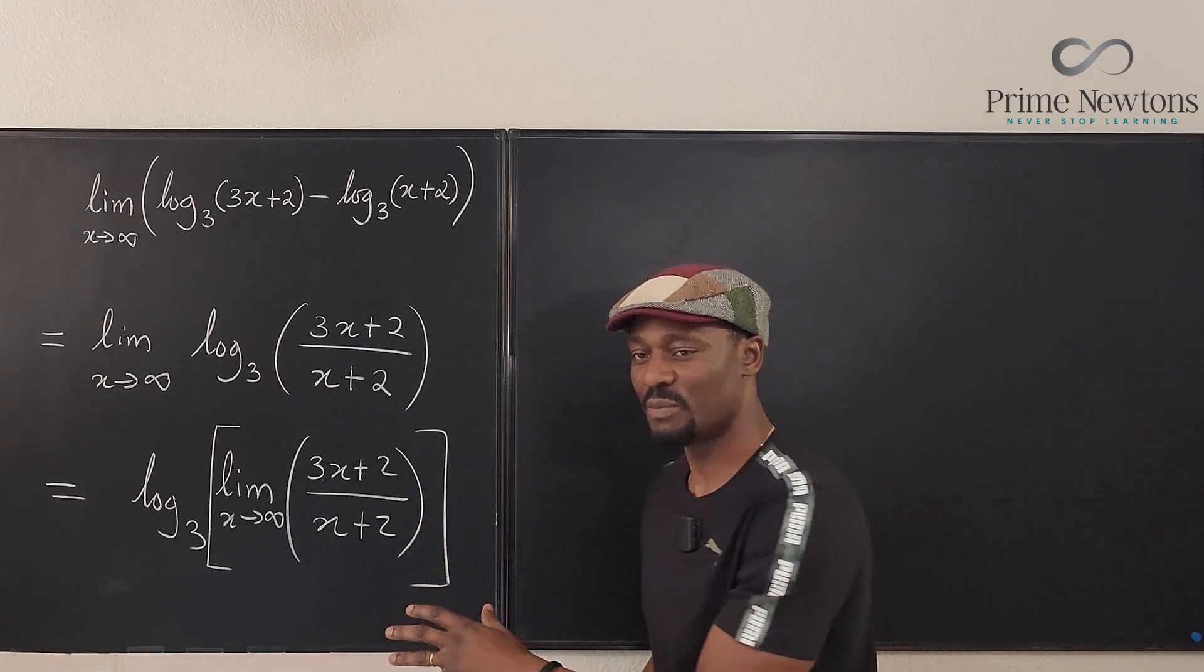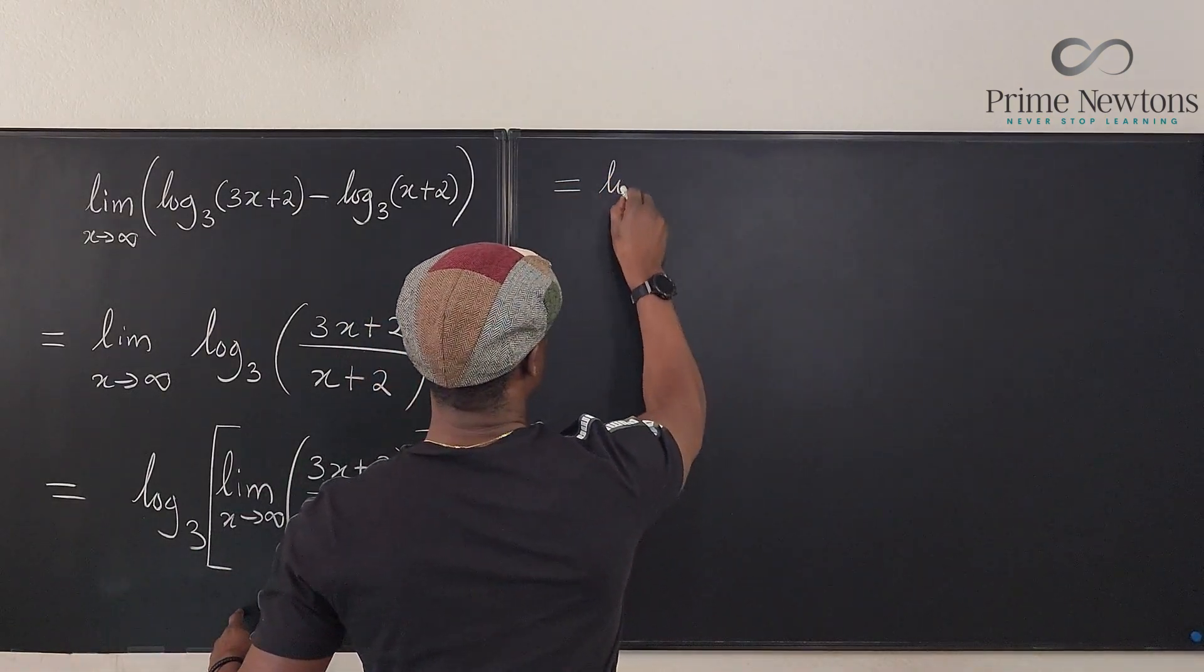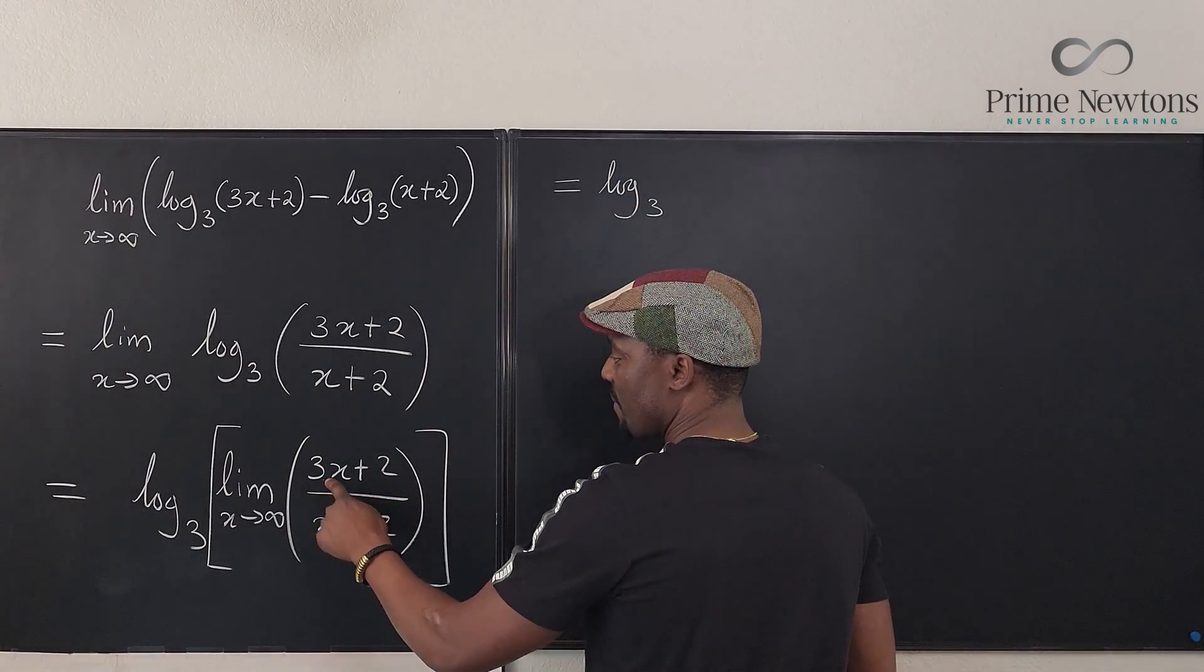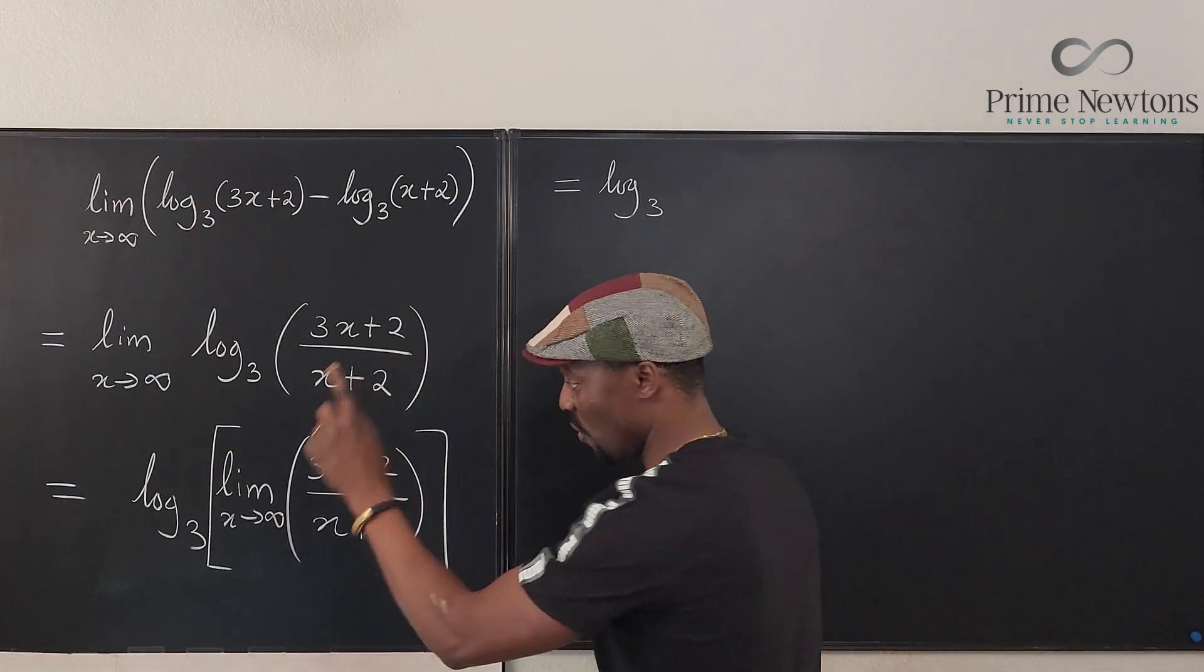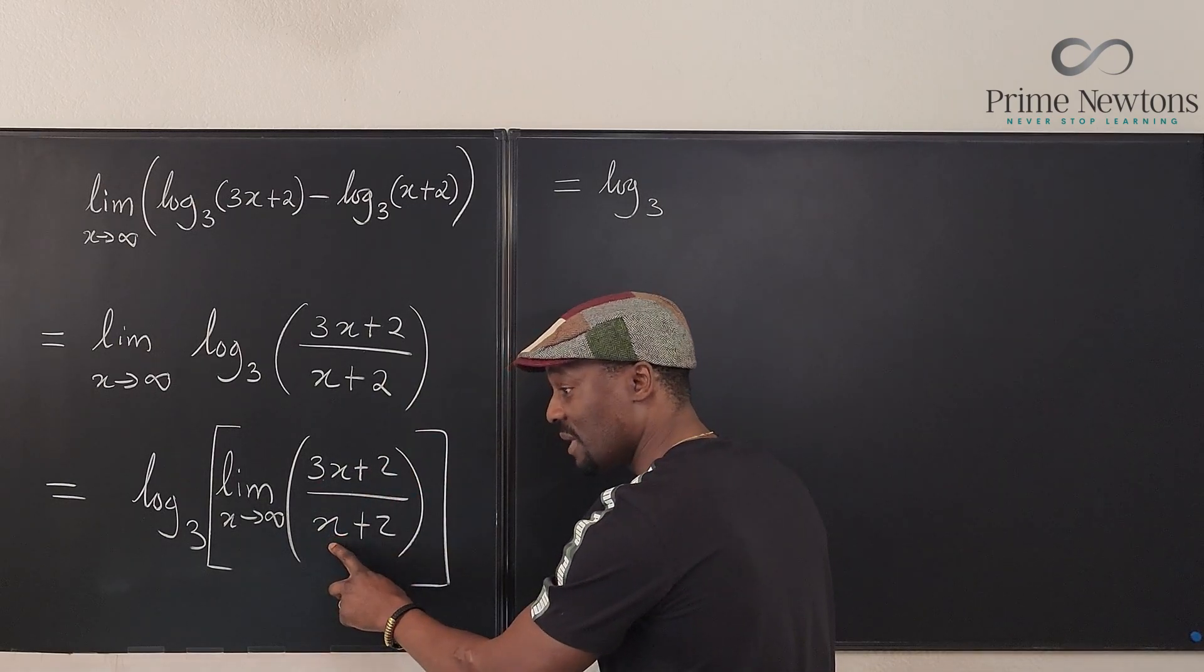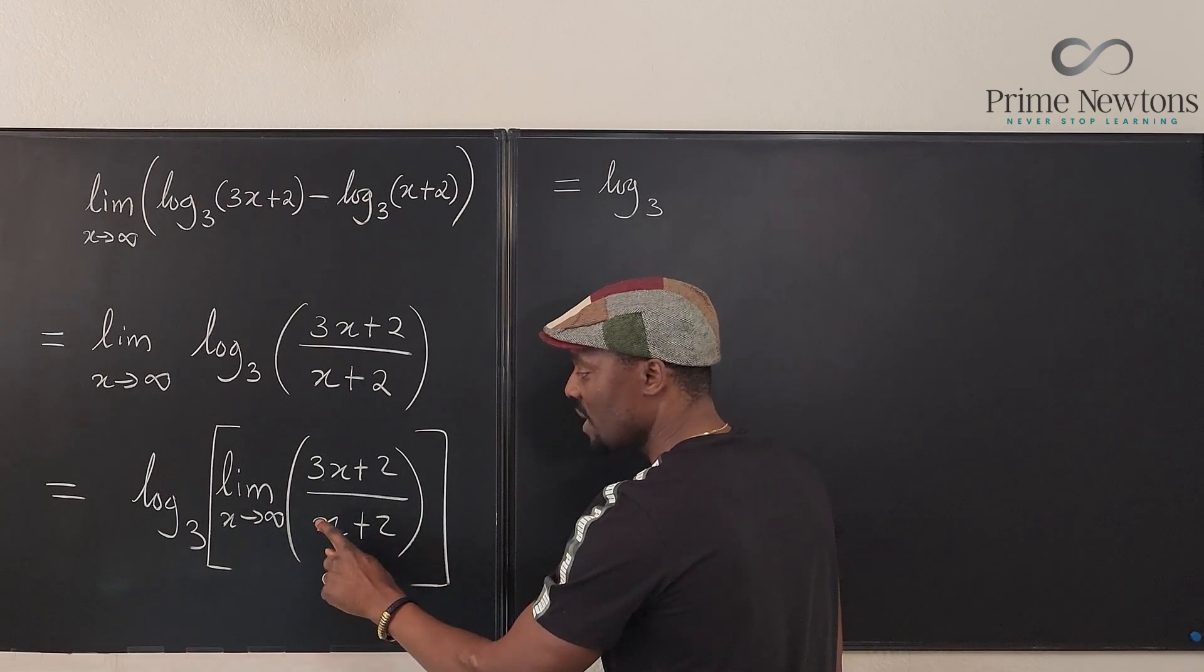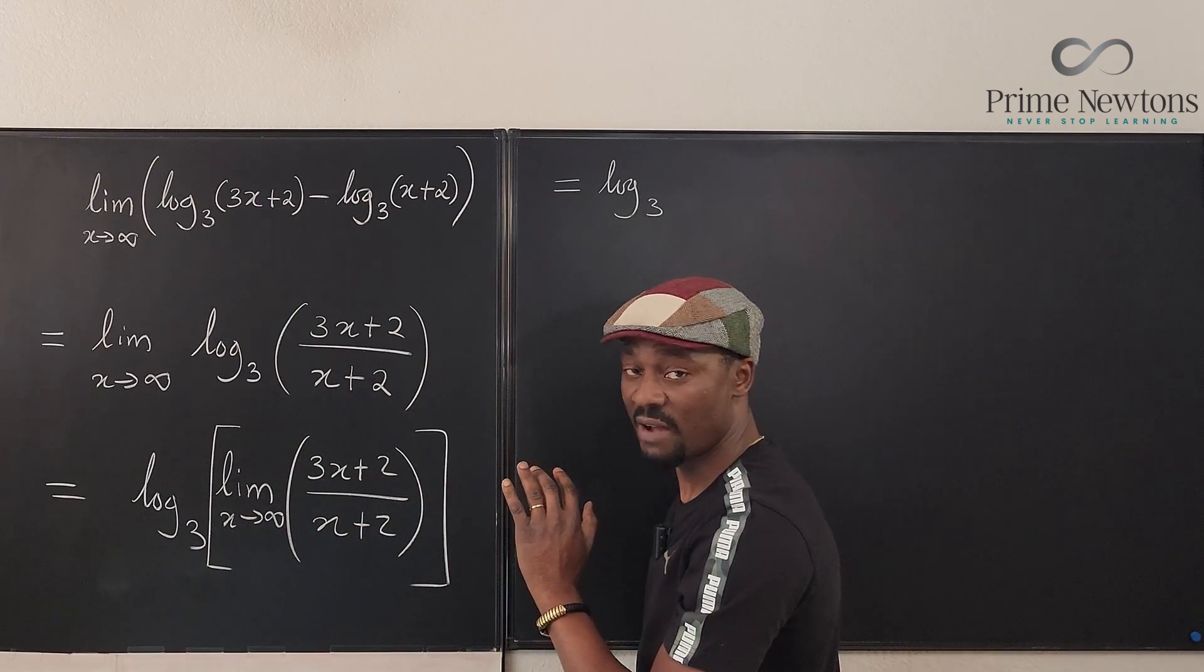Don't do that. Just do what you're supposed to do. Make sure that this is equal to the logarithm to base three of, if you take this limit, what you do is you look at the denominator. In every case, when you're dealing with infinity or negative infinity, look at the denominator, look at the highest power of x, it is this one. Use it to divide every term that is in the expression that you have. Do that.